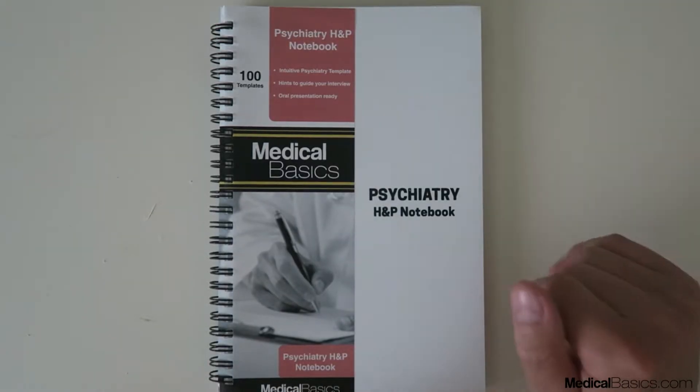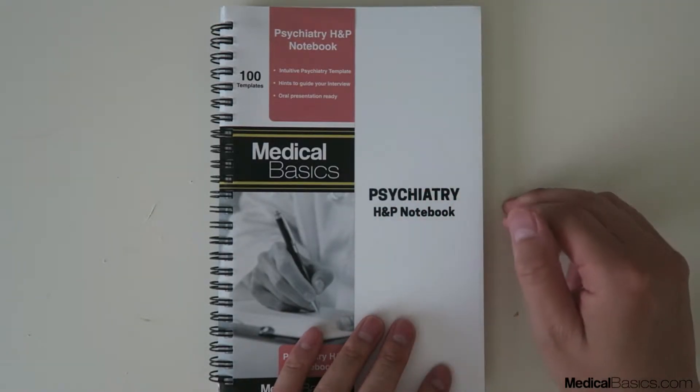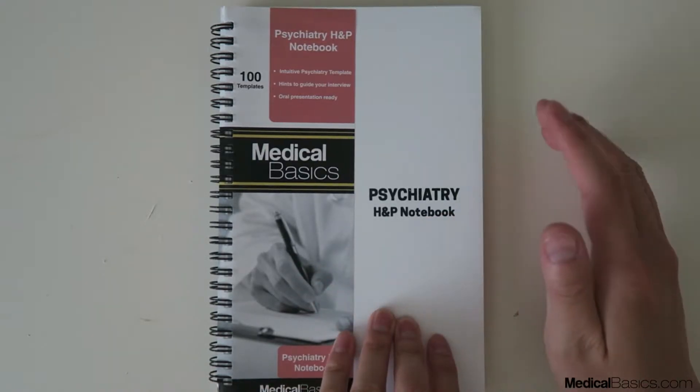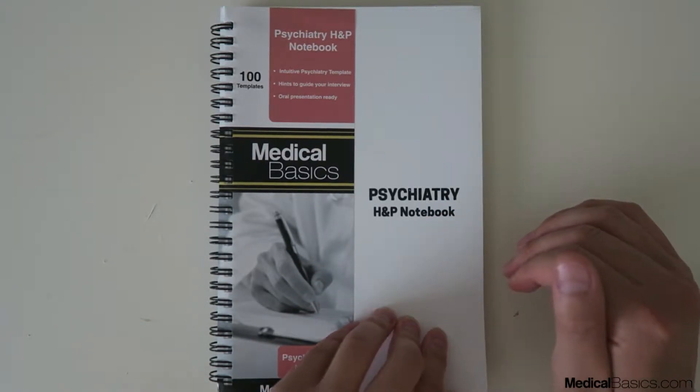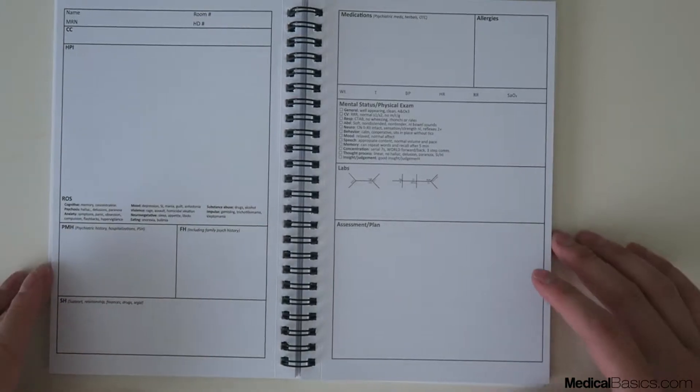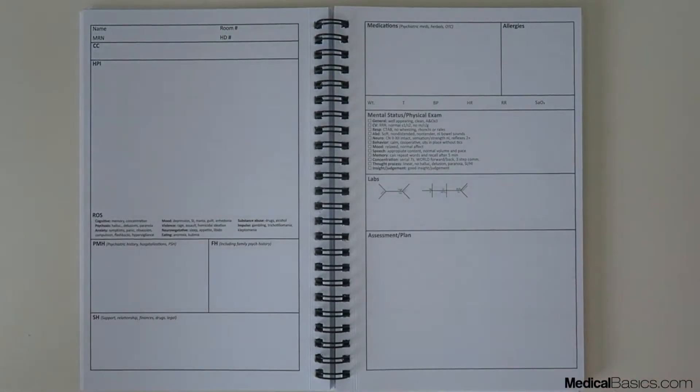In this video I'm going to be giving you a very quick overview on our psychiatry H&P notebook. This is a five and a half by eight and a half inch notebook that's going to fit in your white coat pocket and is catered towards your psychiatry setting.